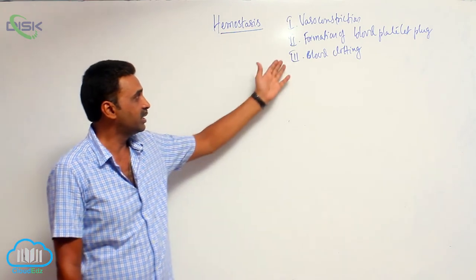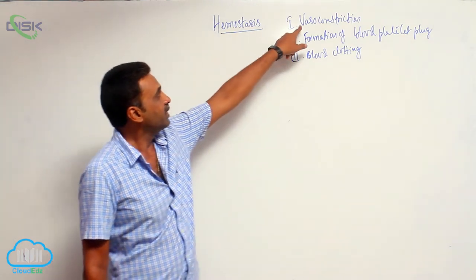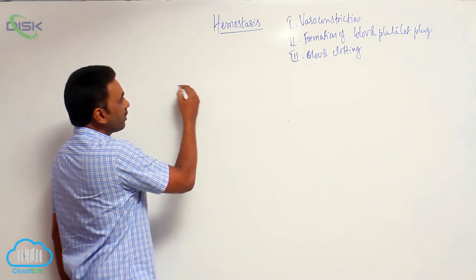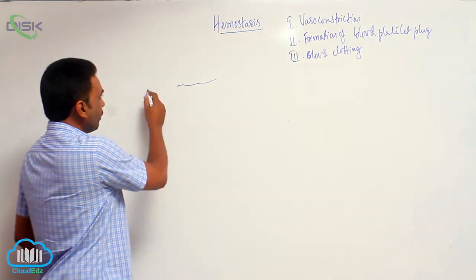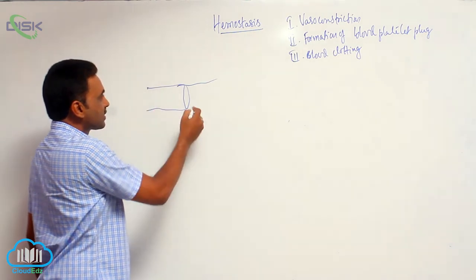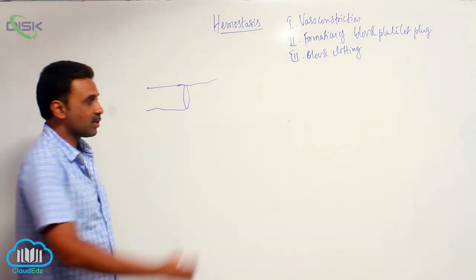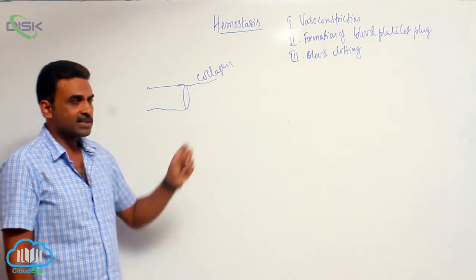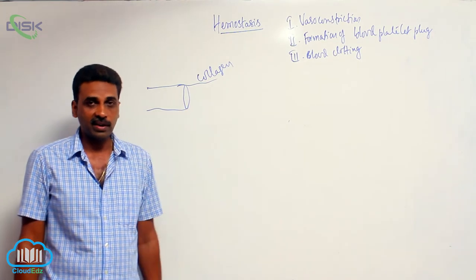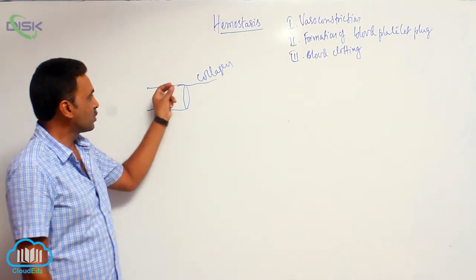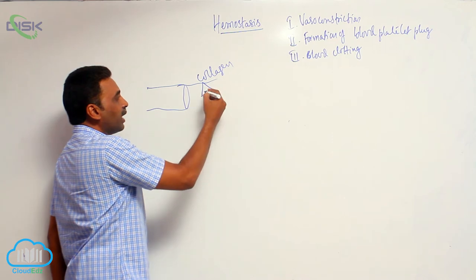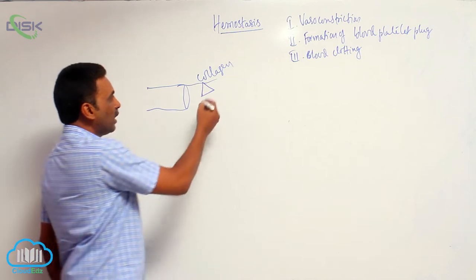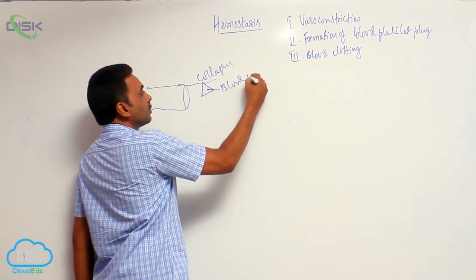In the first mechanism, vasoconstriction: whenever there is injury, from the broken blood vessels, collagenous fibers are exposed. Collagenous fibers are present in the tunica externa, the outermost layer of blood vessels. Blood platelets come and attach to the collagen.